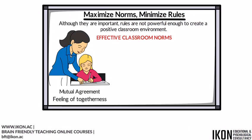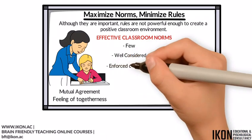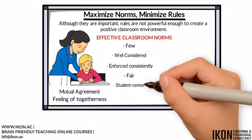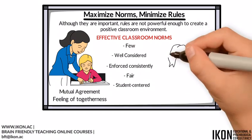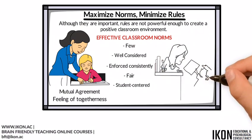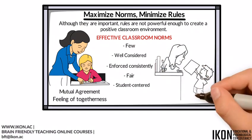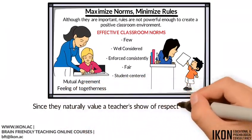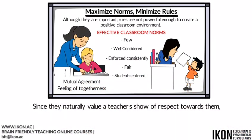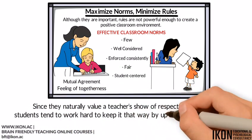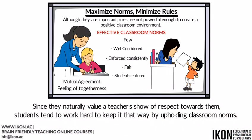Effective classroom norms should be few, well-considered, enforced consistently, fair and student-centered. The successful implementation of norms creates a sense of respect between students and teachers. Since they naturally value a teacher's show of respect towards them, students tend to work hard to keep it that way by upholding classroom norms.